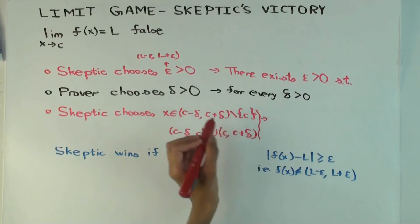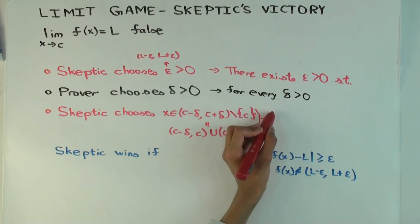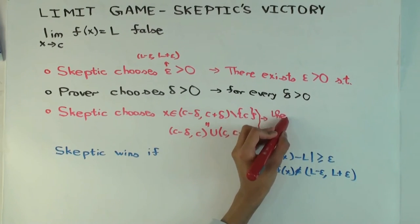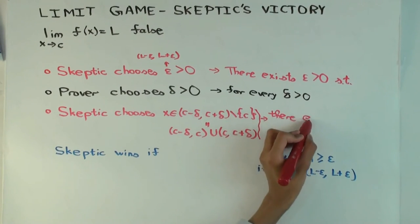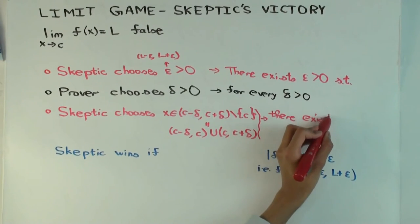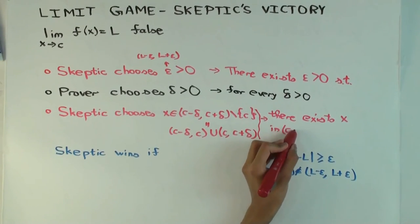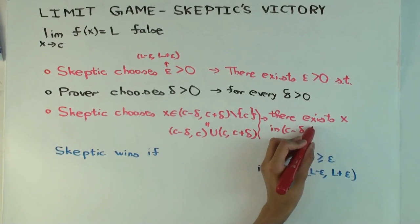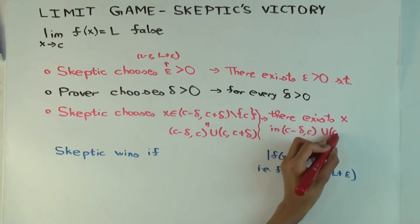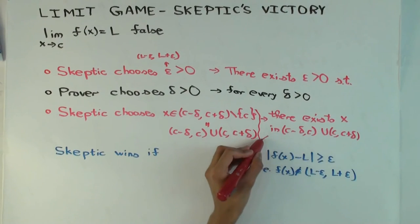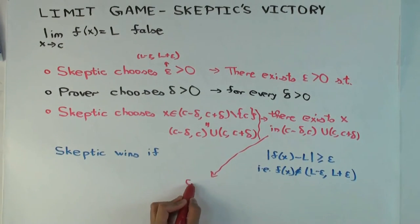What does the next part read? There exists an x, exists x, in this interval. Which we often see written in a slightly different form. Maybe, I don't have space here, so let's write this here. It's also written as zero. This is the form it's usually written in the concise definitions.